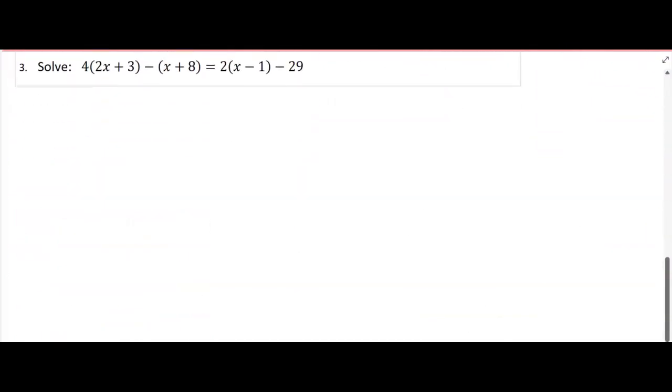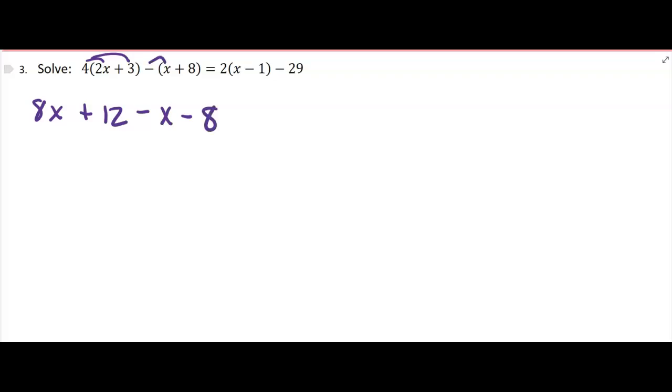Okay, I'm trying to talk quickly so this video won't be too long - you can always stop the video. This is an equation, it's linear. We just want to solve it, so we're going to distribute. We're going to get 8x plus 12 minus x - now it's not an x, I was thinking ahead - minus x minus 8. That's distributing the minus sign. Sometimes students forget to do that, and that's like a really big deal. Distribute that negative sign. Distributing the two here, you're going to get 2x minus 2 minus 29.